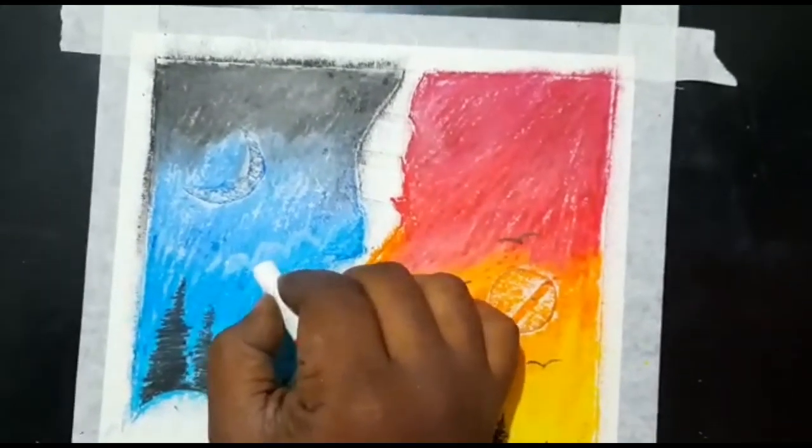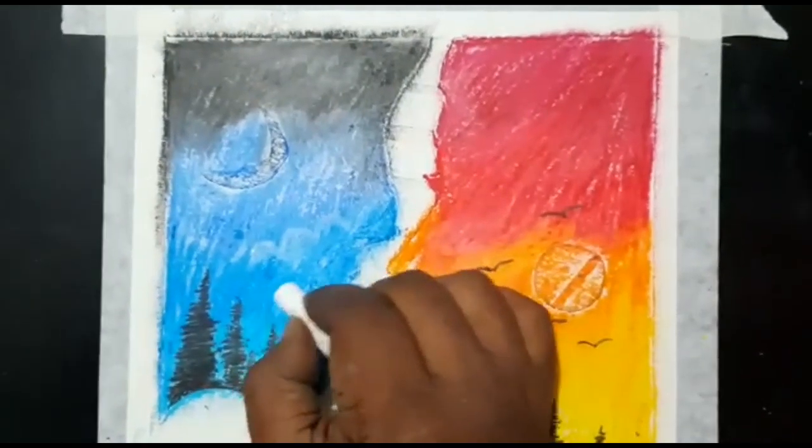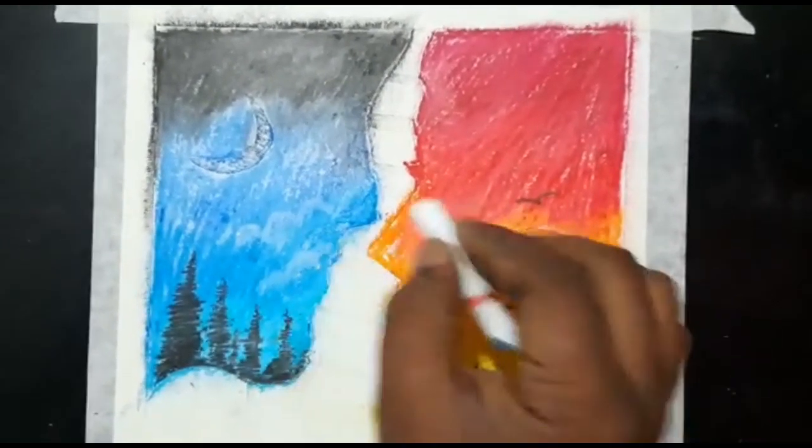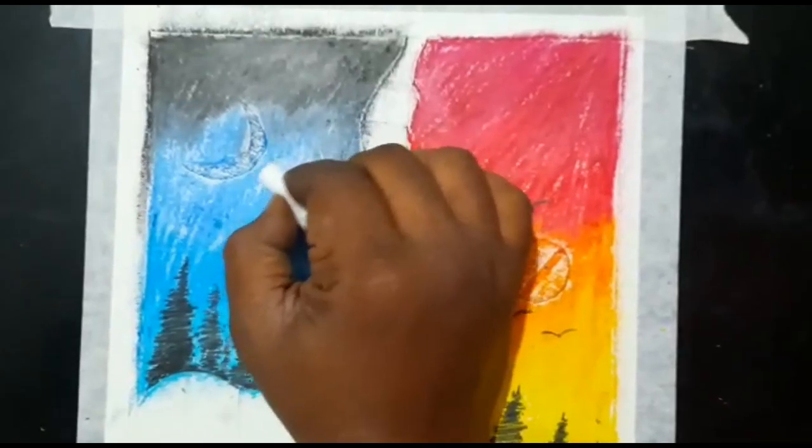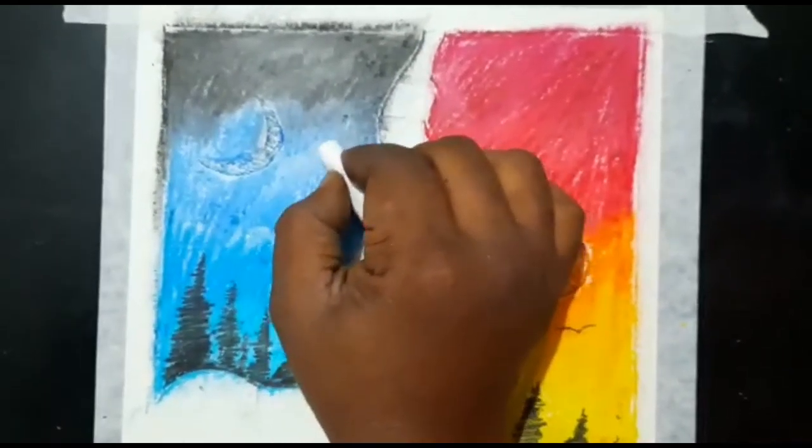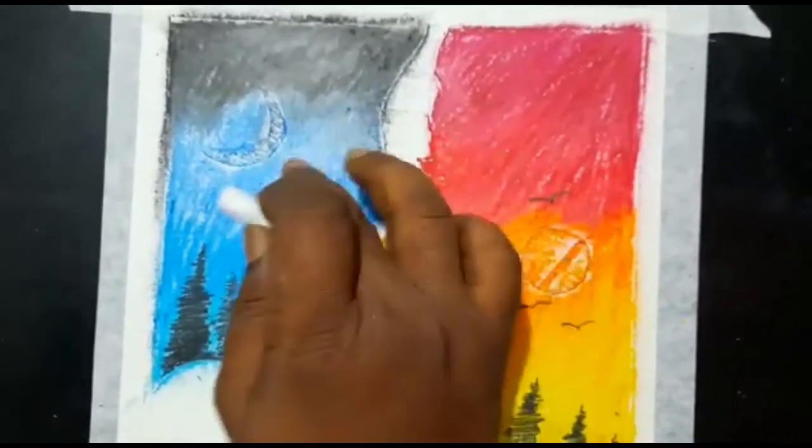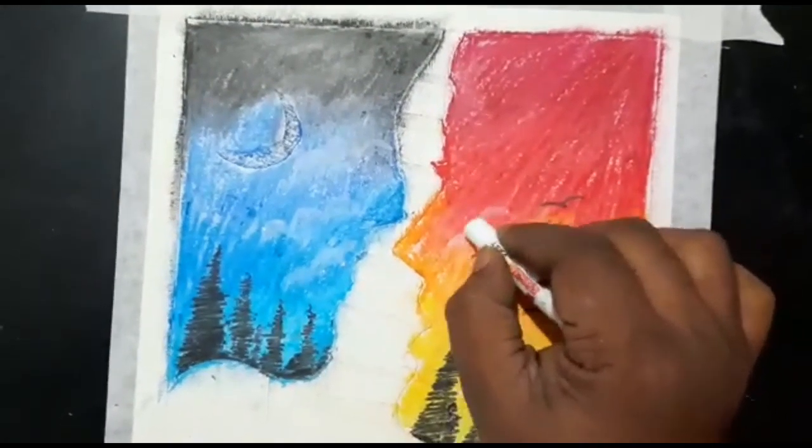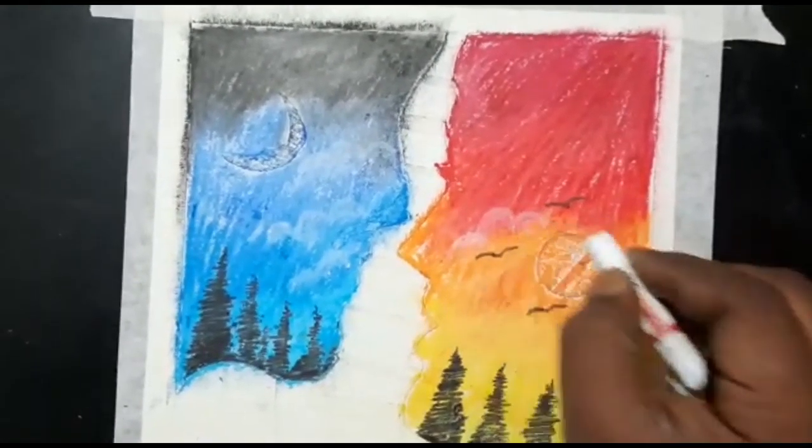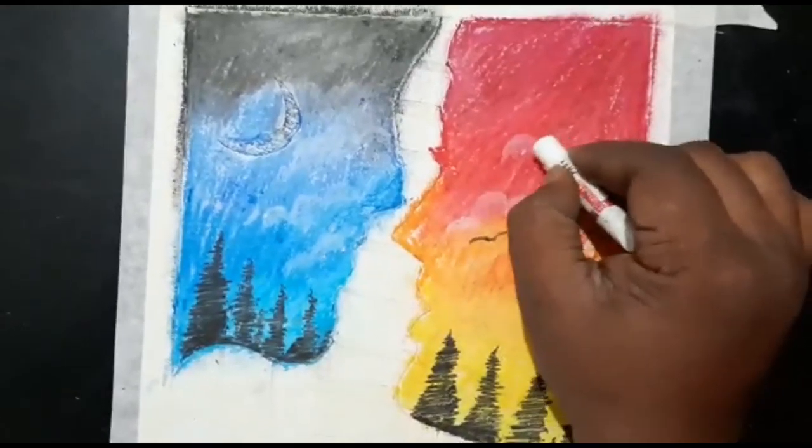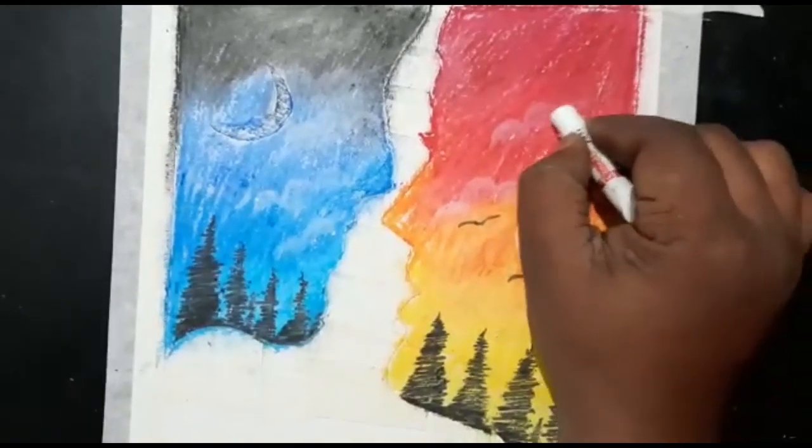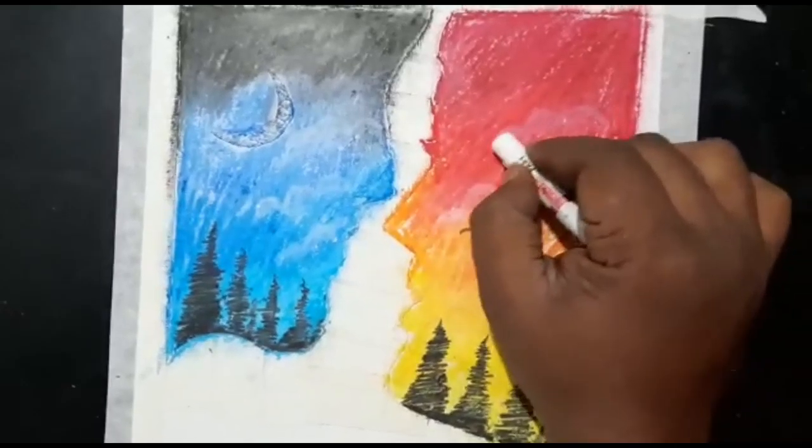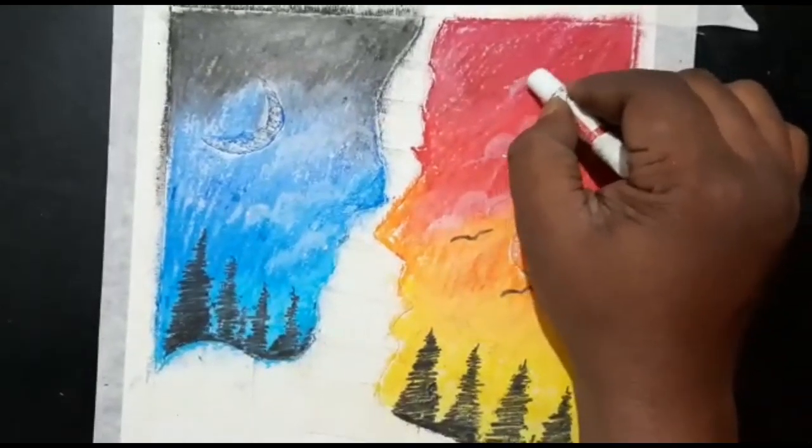After this, with the white color I'm using just to create some clouds. Yeah, both the side clouds I'm drawing and some birds also there on the day side, on the girl side.